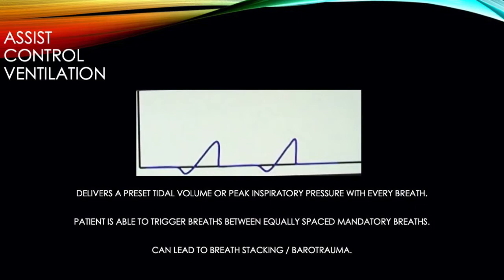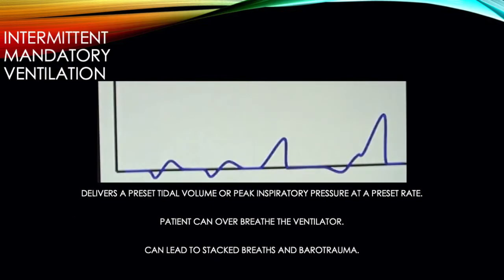Additionally, if the patient were to trigger a breath just prior to a regularly scheduled breath, the ventilator could deliver both of those breaths in succession, which can lead to breath stacking and barotrauma. The next mode to come out was intermittent mandatory ventilation, or IMV. The concept here was to fix the problems between CMV and assist control.